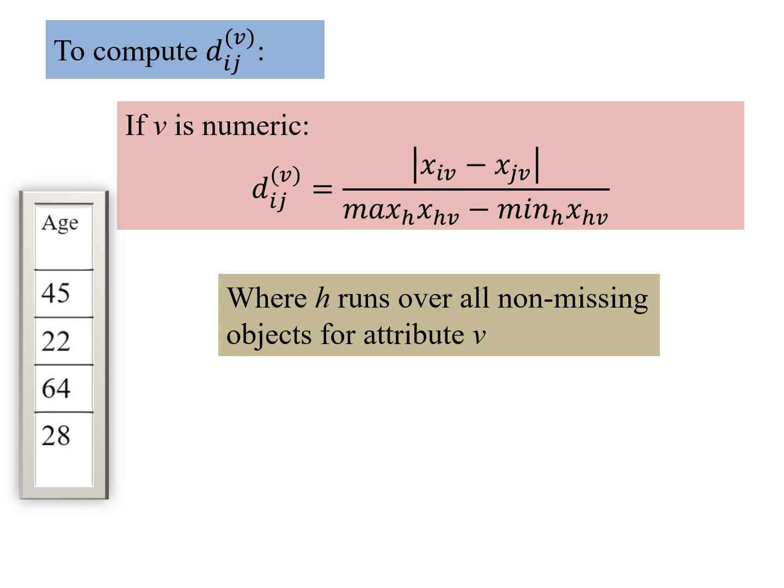So dij v is computed as follows for numeric v. Here we have an example, where we have the numeric attributes. So dij v is the value for the i-th data point and the value for the j-th data point. The difference is computed in the absolute value of the difference, divided by the difference of max and min of this v-th attribute.